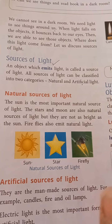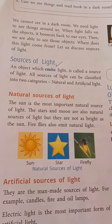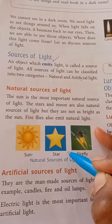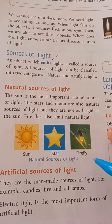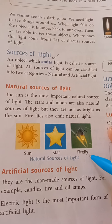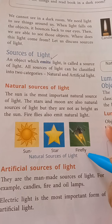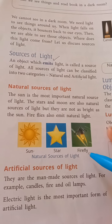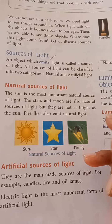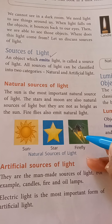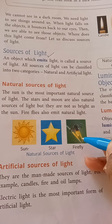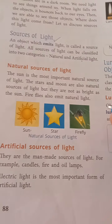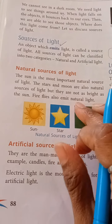Stars are not as bright as the sun — the sun emits much more light than the stars. Firefly also emits natural light. You may have seen the firefly — it is a small insect that glows at night. So it also produces light; it is a natural source.